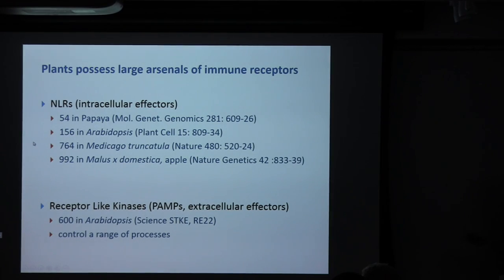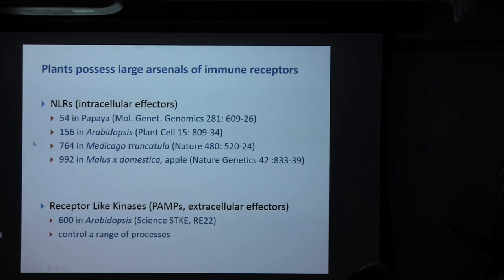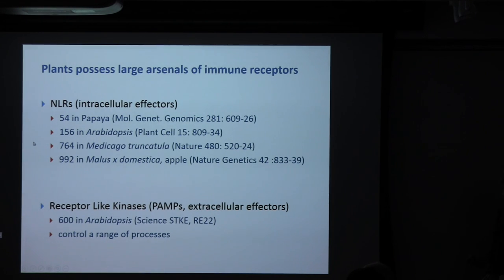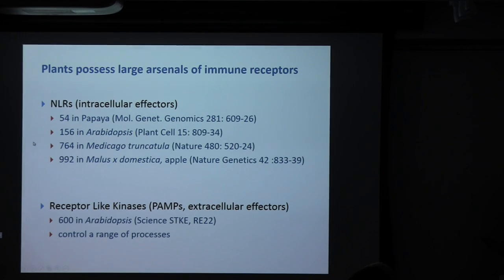Plants also have large arsenals of immune receptors. In plant genomes, the R proteins or NLRs that recognize intracellular effectors range from about 54 in papaya to around 1,000 in domesticated apple, and the repertoire differs significantly even among different genotypes of a particular plant. There are also large numbers of receptor-like kinases or receptor-like proteins — at least a subset involved in pathogen perception. In the model plant Arabidopsis, there are 600 of these. The number of NLRs is also increasing with the advent of RenSeq to identify more NLR receptors.